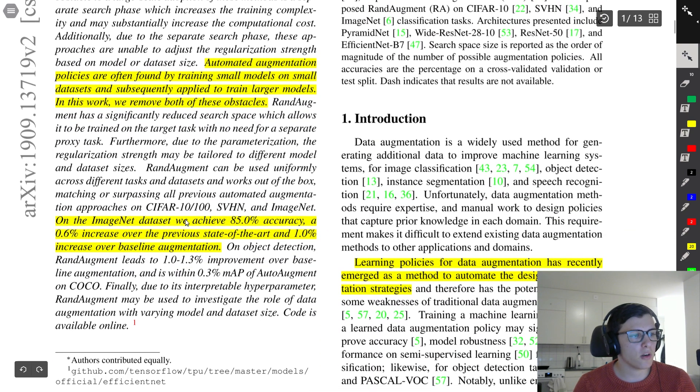RandAugment achieves 85% accuracy on ImageNet, which is 0.6% increase over previous state-of-the-art and 1% higher over baseline augmentation.